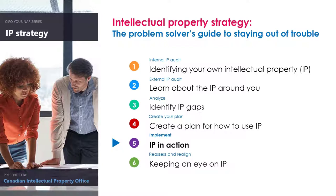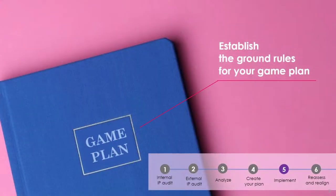Step 5: Implement. You've analyzed the IP and also have a plan on how to fill your IP gaps. You've come a long way. Let's make sure you have some supporting frameworks and policies in place to implement your IP strategy.